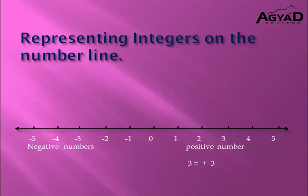So negative 1 is bigger than negative 2, and negative 3 is bigger than negative 4. Negative 6 is bigger than negative 7. This is the opposite rule compared to positive numbers.